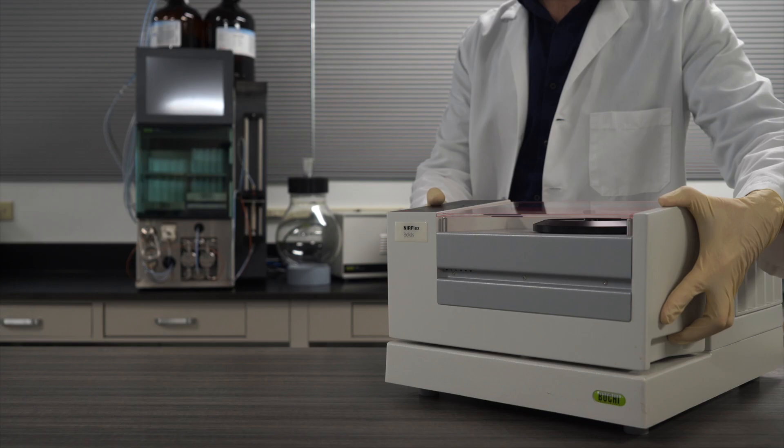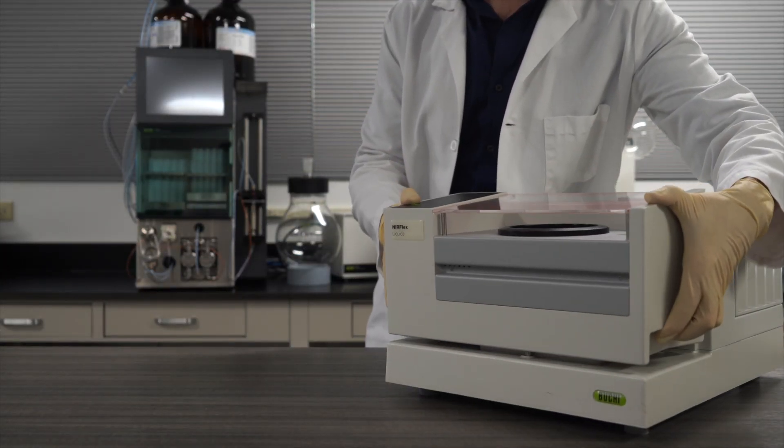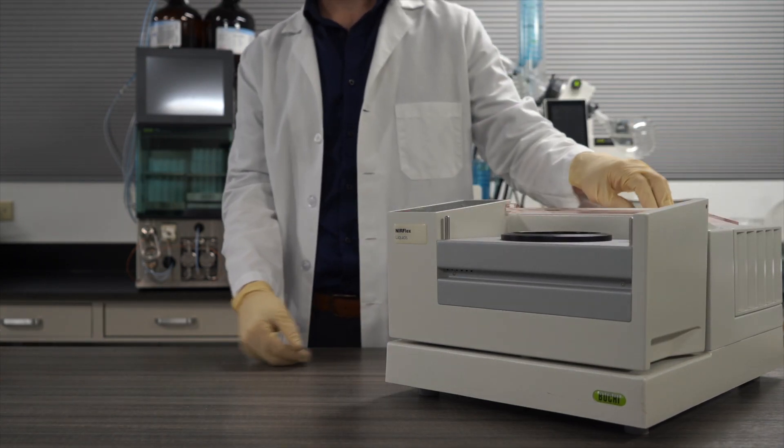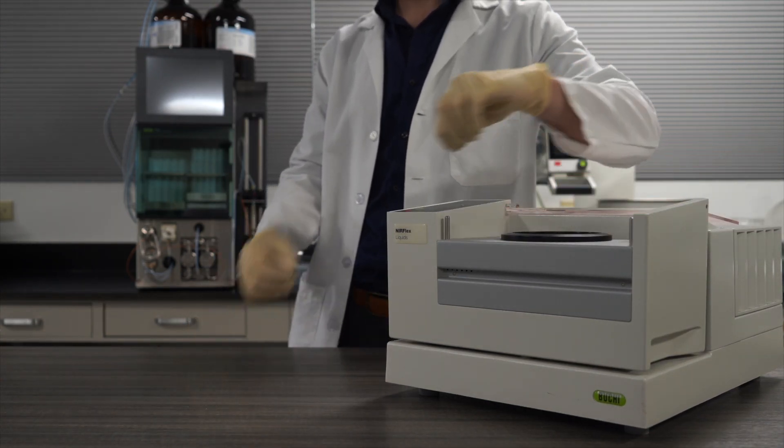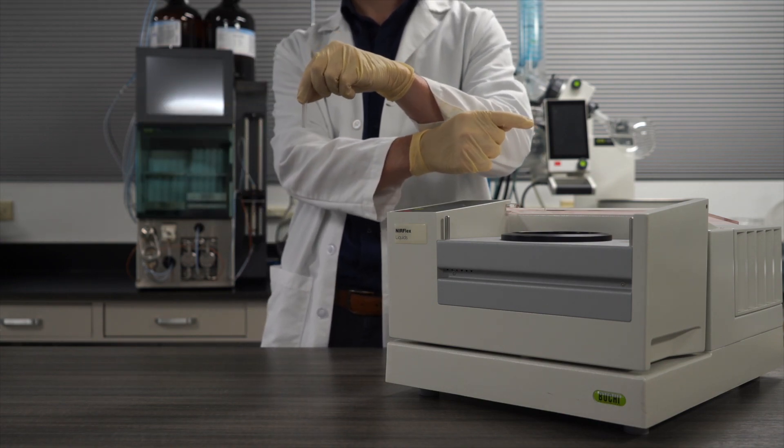While on the topic of liquids, let's hop over to the liquids module, which comes standard with a six position auto-sampler for cuvettes or vials. This liquids module works by the principle of transmission, where we collect light that passes through a sample rather than what's being reflected.